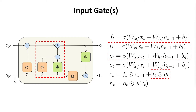The second gate is the input gate, which controls how much information to add to the cell state at the current step given the previous hidden state and embedding vector. This gate is composed of two parts. The first part is a sigmoid-type neural network that takes as input the current embedding and the previous hidden state, multiplies each by weight matrices and adds a bias. Unlike the forget gate, this sigmoid is not applied to the cell state — it's applied to another hidden representation computed by another small neural network represented by the phi symbol.